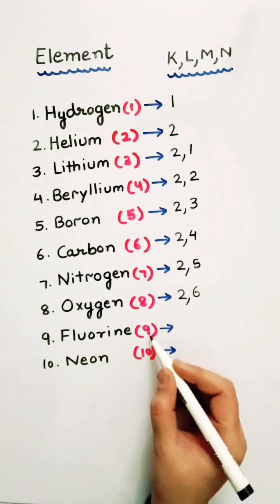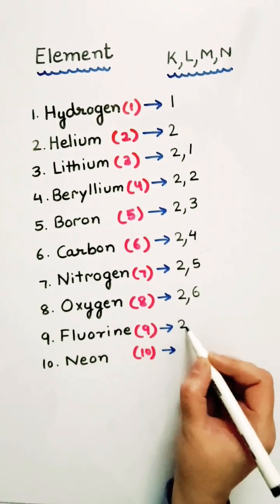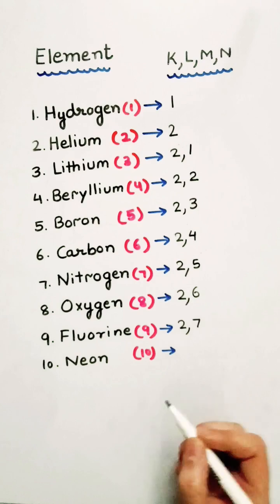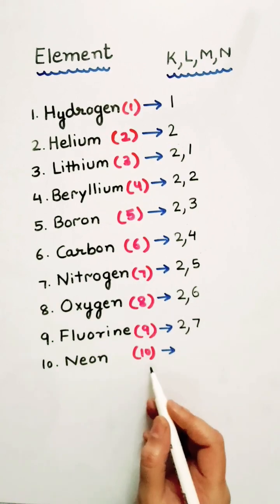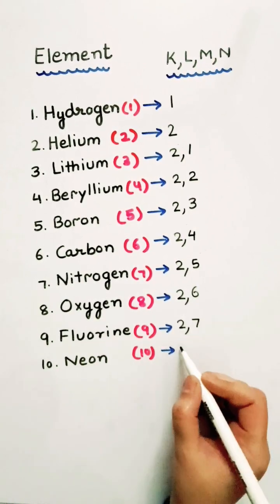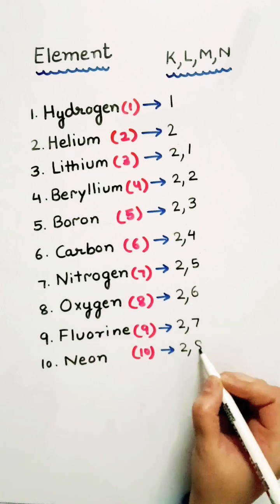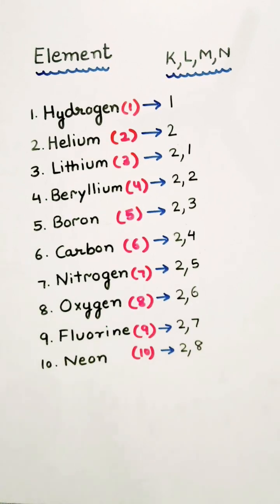Fluorine, 9 electrons, 2 and 7. Now, this is inert gas having atomic number 10: 2, 8. Thank you.